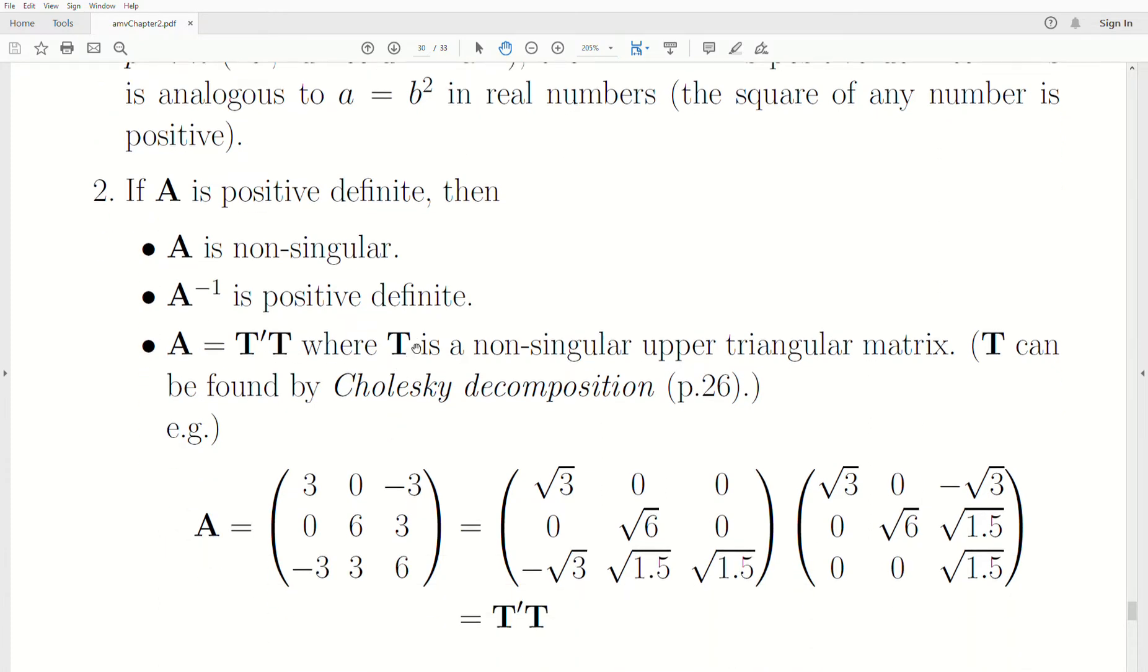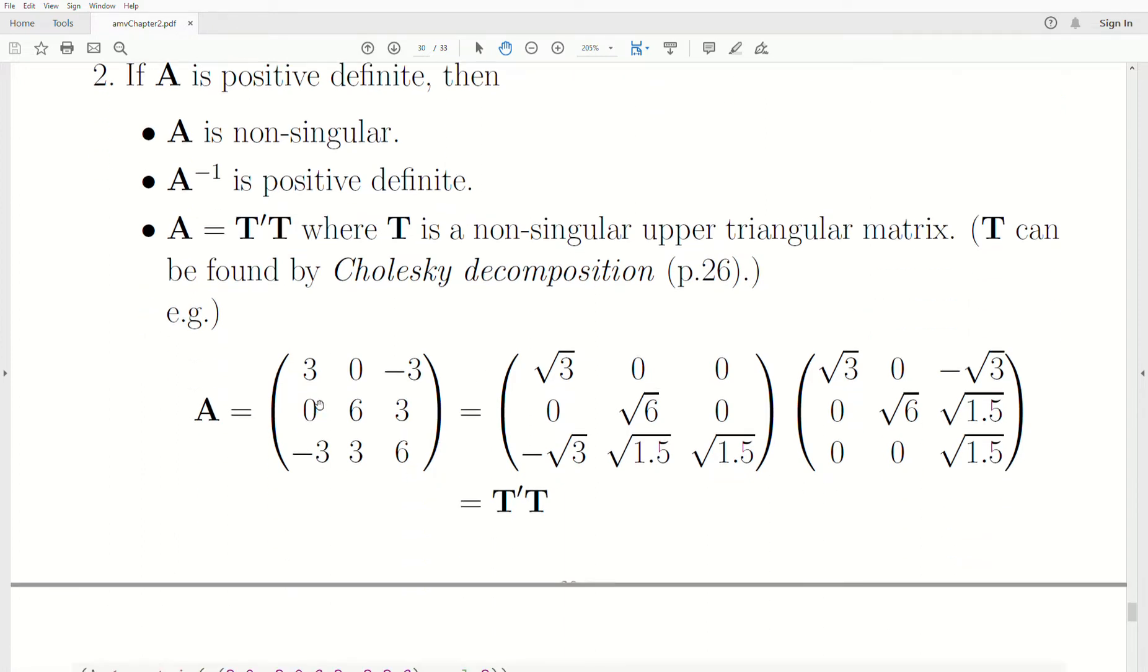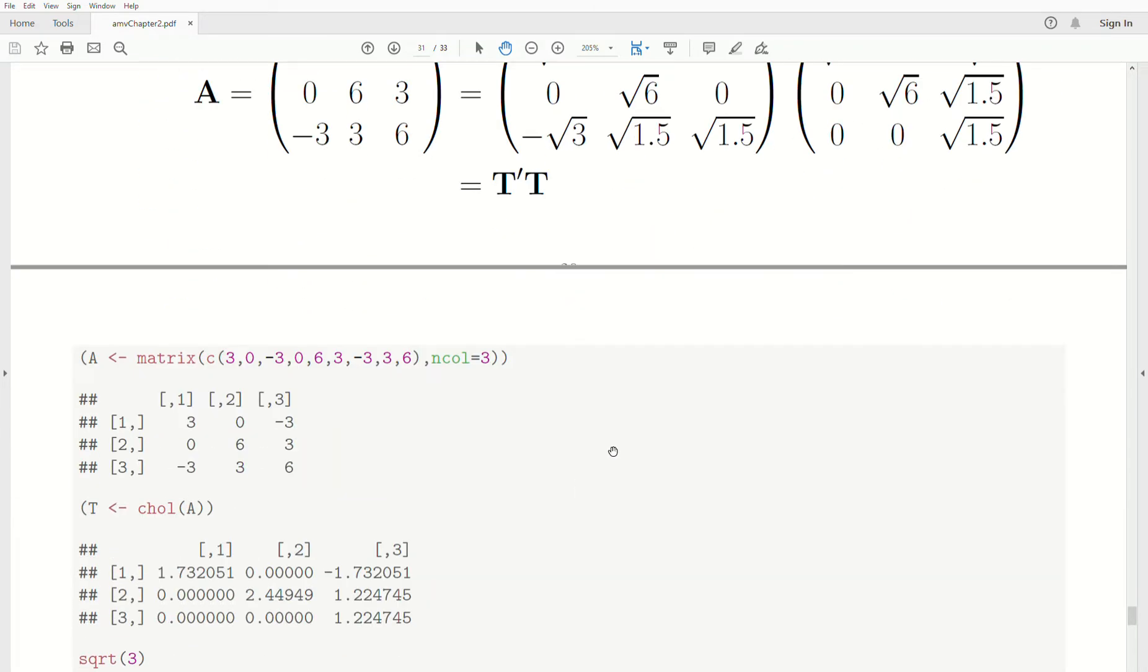And T in this method here, it's called Cholesky's decomposition, and there's actually several ways to do this. But it's the way to take a positive definite matrix, create an upper triangular matrix, and then this product is the original. That's so cool how that works.